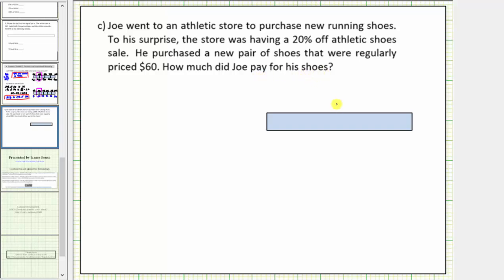How much did Joe pay for his shoes? So to answer this question, we'll use the bar to determine 20% of 60, and then we'll subtract that amount from $60 to determine how much he paid for the shoes.